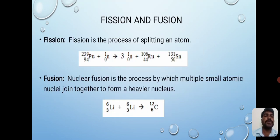Fission and fusion. Fission is the process of splitting an atom. Nuclear fusion is the process by which multiple small atomic nuclei join together to form a heavier nucleus.